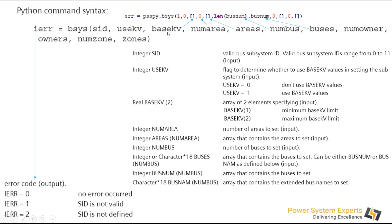The next parameter is baseKV. This tells you that you need an array of exactly two elements. Anything more than two is going to cause an error. The two elements are: baseKV1 should be the minimum value and baseKV2 should be the maximum value. You need to understand these APIs correctly before using them, otherwise you might not get what you expect.